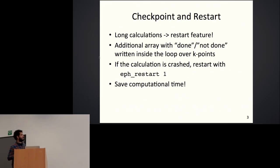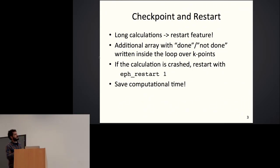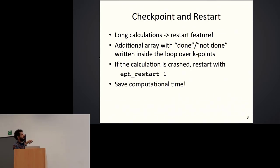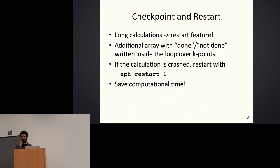An important feature we implemented is a restart capability, since these computations can be time consuming. For each K point we compute the self-energy, and we implemented a restart feature with a done/not-done array. Inside the loop we track whether the self-energy for each K point was computed. If the calculation crashes due to wall time or other issues, we can restart by adding the appropriate variable to the input file. This is important to save computational time, as some of these calculations still take considerable time.